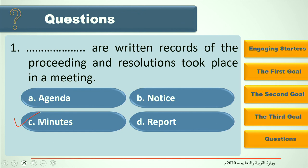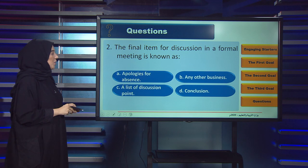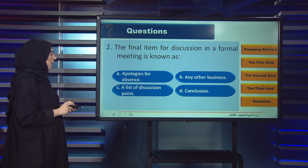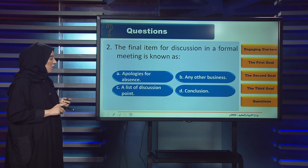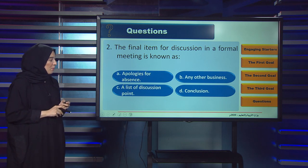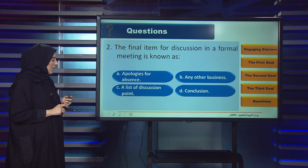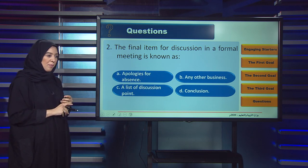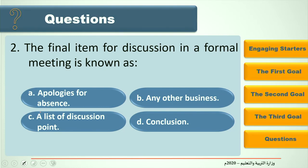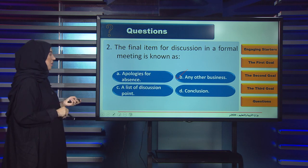Question two: The final item for discussion in a formal meeting is known as — A. Apologies for absence, B. Any other business, C. A list of discussion points, D. Conclusion. The answer is B: Any other business — this is the last item in the discussion.